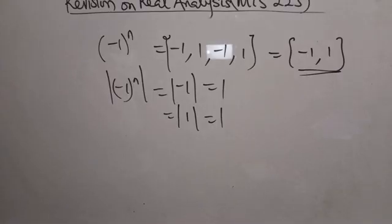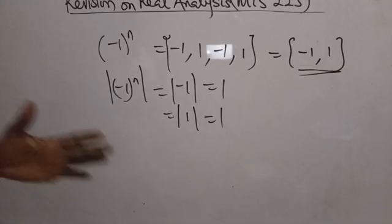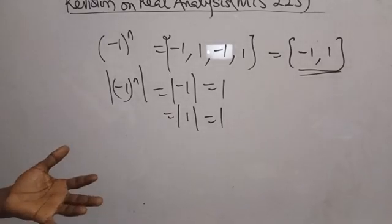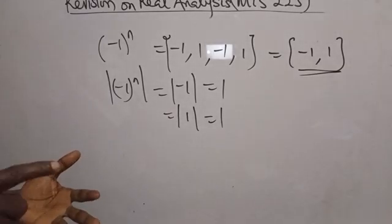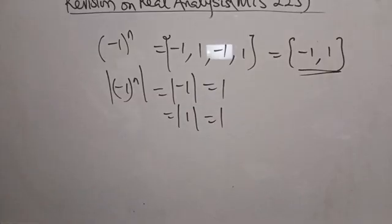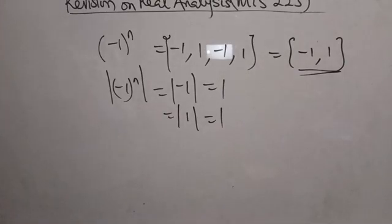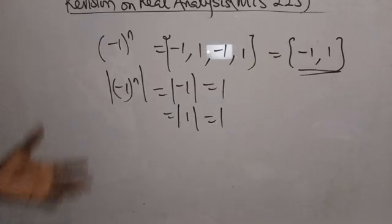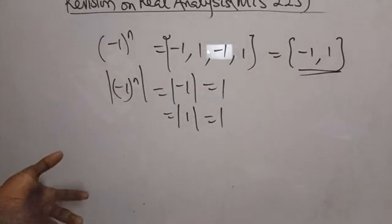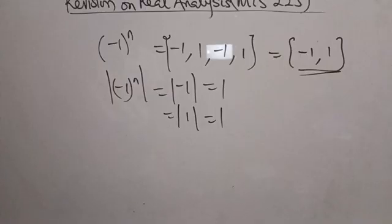We also discussed the concept of equivalence relations. A relation is said to be an equivalence relation if it is symmetric, reflexive, and transitive. A relation is said to be a partial order if it is anti-symmetric, reflexive, and transitive. These are things we have actually covered in this course.